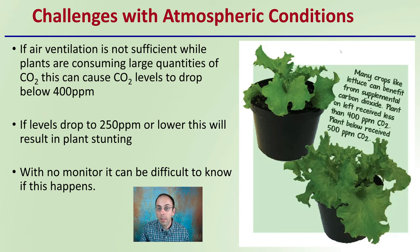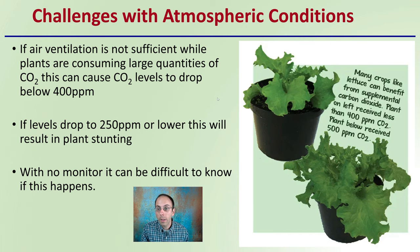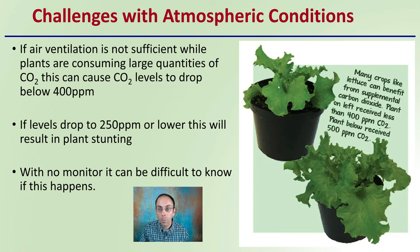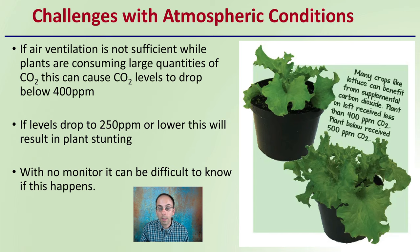We see an example here with a lettuce crop. Many crops, like lettuce, can benefit from supplementation of carbon dioxide. The plant on the left received less than 400 parts per million, and the plant shown here received 500 parts per million — which is above atmospheric levels — and we can see a visible difference between the two.